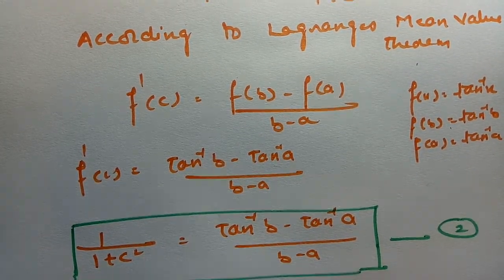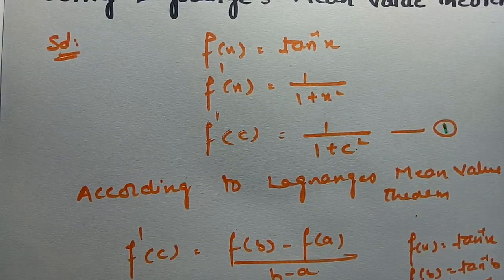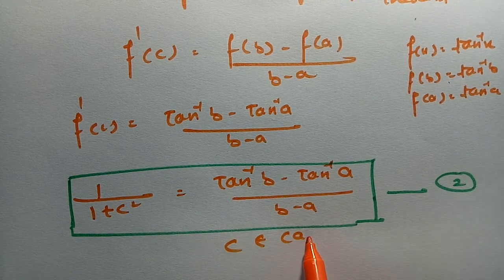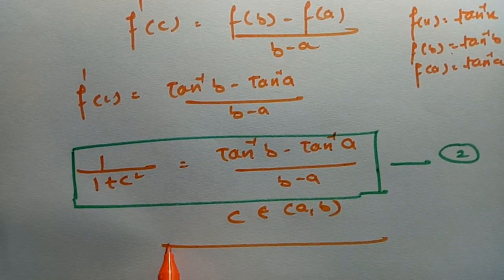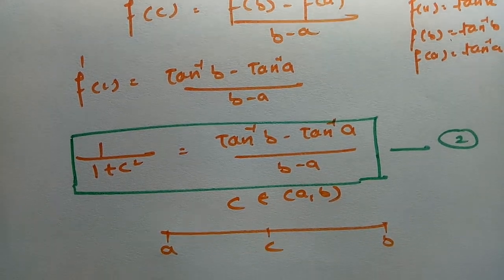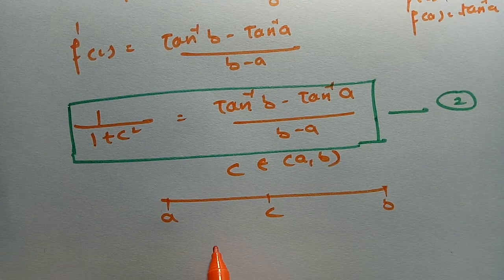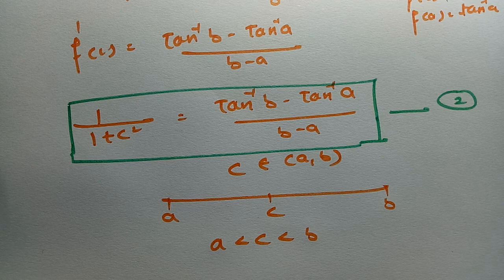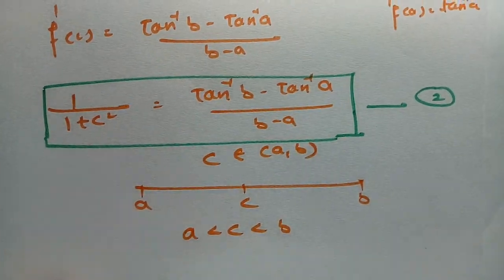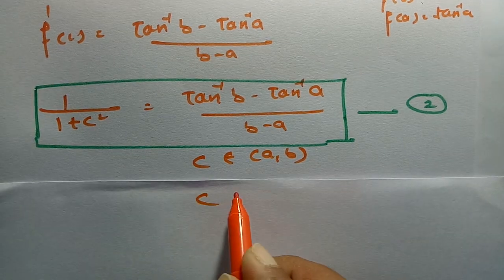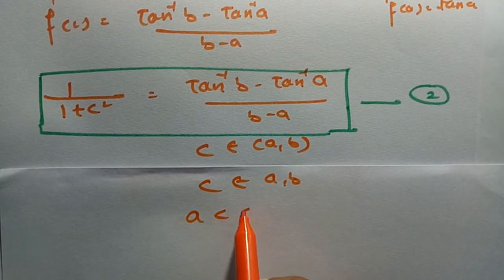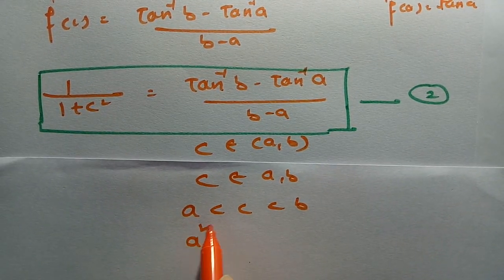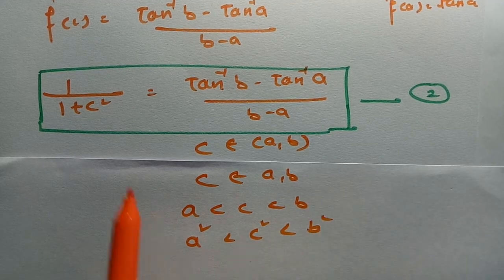According to Lagrange's mean value theorem, c belongs to the open interval (a, b), meaning a < c < b. We want c², so squaring throughout gives a² < c² < b².